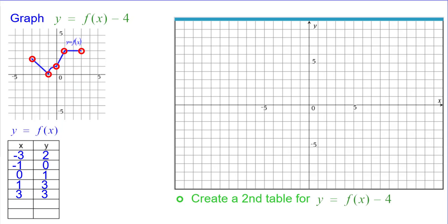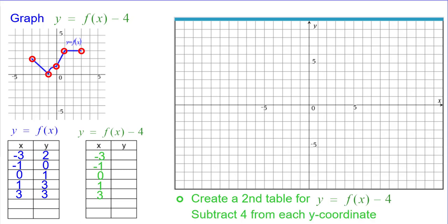We'll create a second table for y equals f of x minus 4. And for that one, we're going to subtract 4 from each y coordinate because that's what it says to do in the equation.